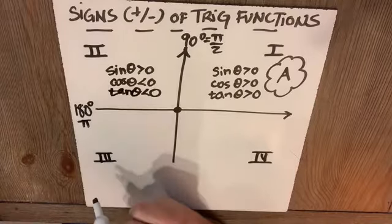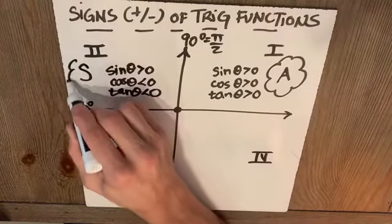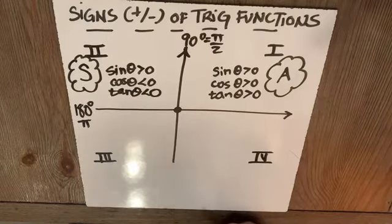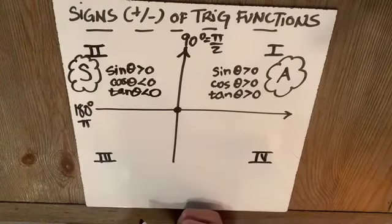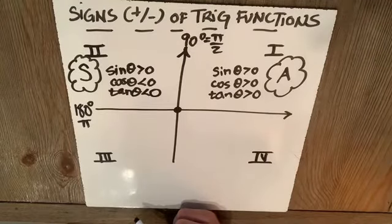So which trig functions are positive in quadrant two? Just the sine. And of course, its reciprocal function cosecant. But I'll just say sine and let you figure out that its reciprocal function will also have the same sign there.